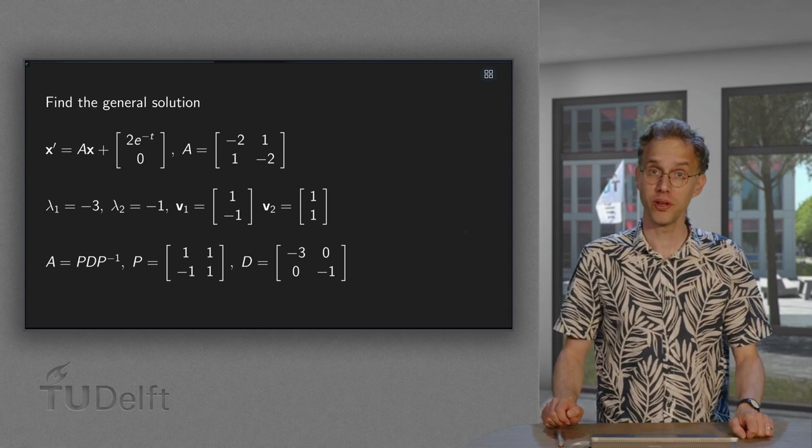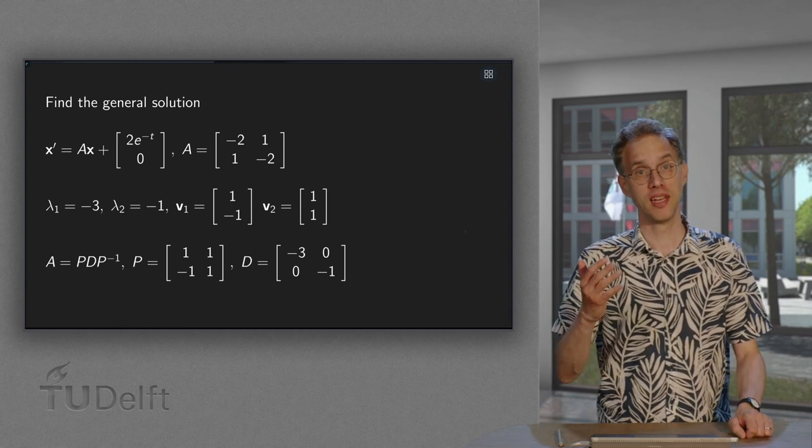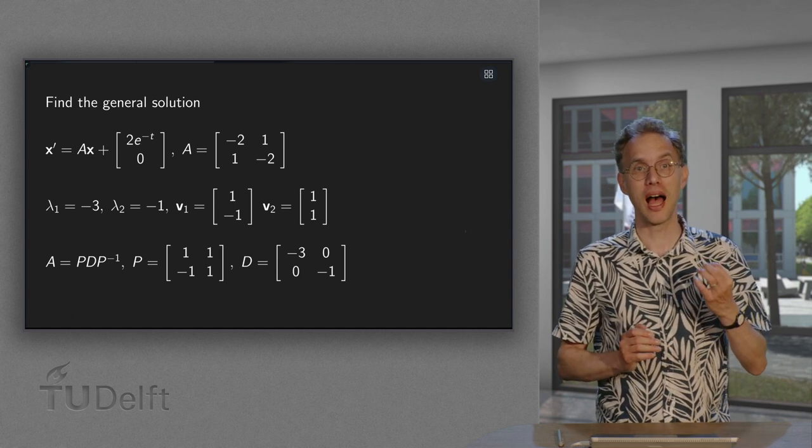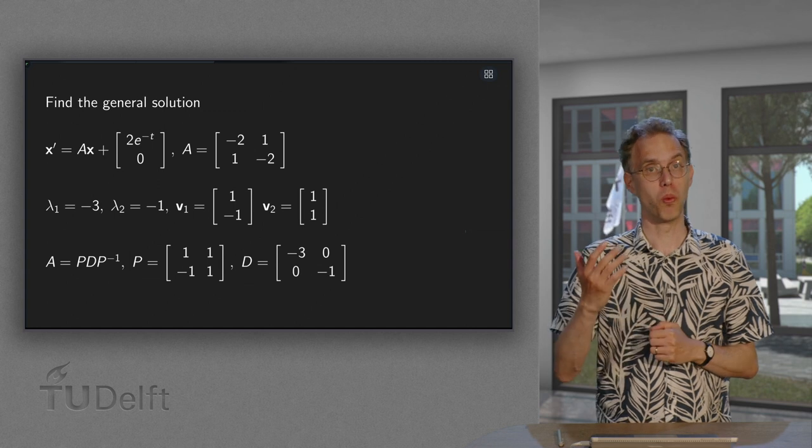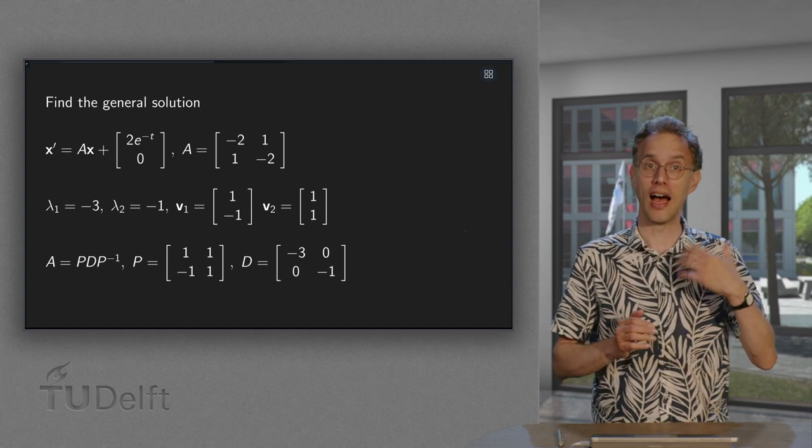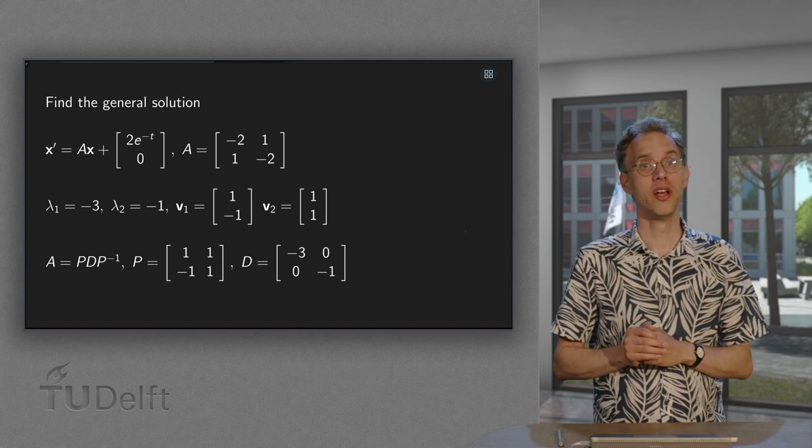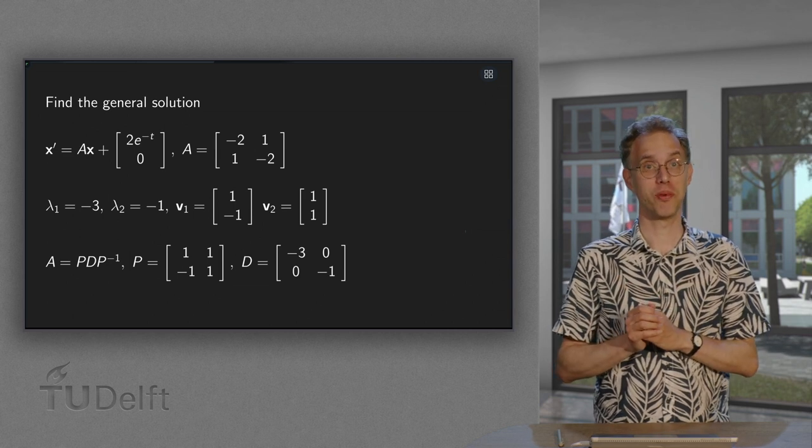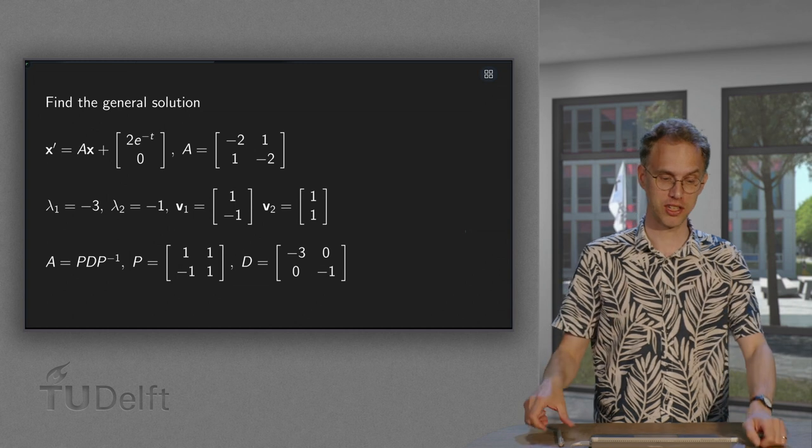We can solve a non-homogeneous system if A is diagonalizable, as we discussed before. How does this work in practice, and what are the tricky parts? And does it always work? We will see all of that when we go through an explicit example in this video. So let's go.